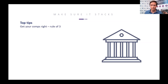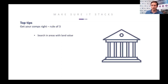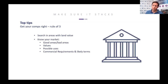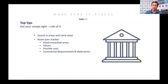Obviously, getting your comps right. I always work on a rule of three — if there are three comps of a particular type in a certain area, then I feel comfortable I've got that comp right. Searching areas of land values — we'll show you how to do that today. Know your local market; search in the right parts of town. If you're doing a private scheme, search in good areas.